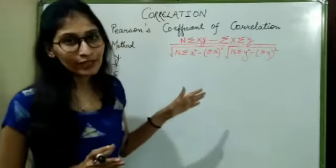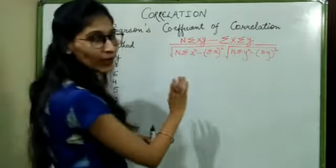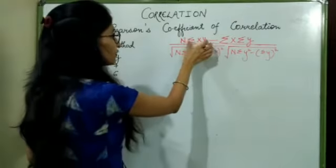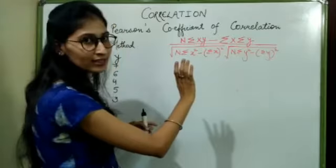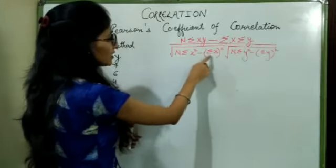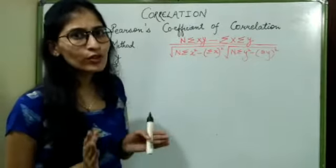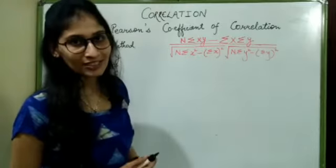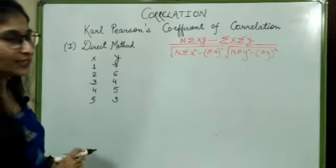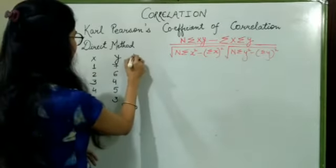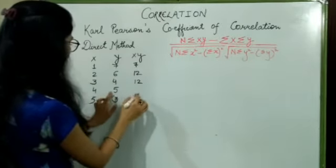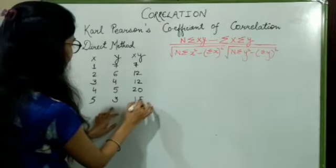If you observe carefully, the formula is easy to learn. In the numerator it is xy together; in the denominator x and y are separated. The first term has n, the second term is without n. Now let's see its application. Values of x and y are given; I need xy, x², and y². For xy: 1×7=7, 2×6=12, 3×4=12, 4×5=20, 5×3=15. For x²: 1, 4, 9, 16, 25. For y²: 49, 36, 16, 25, 9.